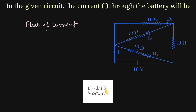As we all know, current flows from higher potential to lower potential. So if we consider this to be a conductor and the direction of current is like this, by looking at the direction of current, we can find out that this point is at higher potential than this point. So current will flow from higher potential towards lower potential. This is how the current flows.